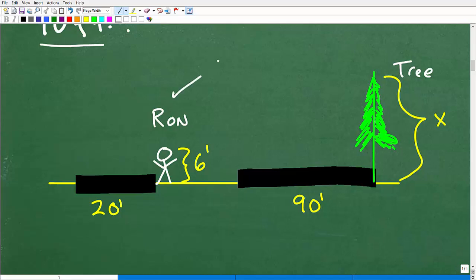So we're told Ron is 6 feet tall, his shadow is 20 feet. How tall is this tree? We're looking for X, right? X is when you're solving a problem and you don't know the value, you use a variable to represent that unknown. But we do know that the shadow of the tree is 90 feet.